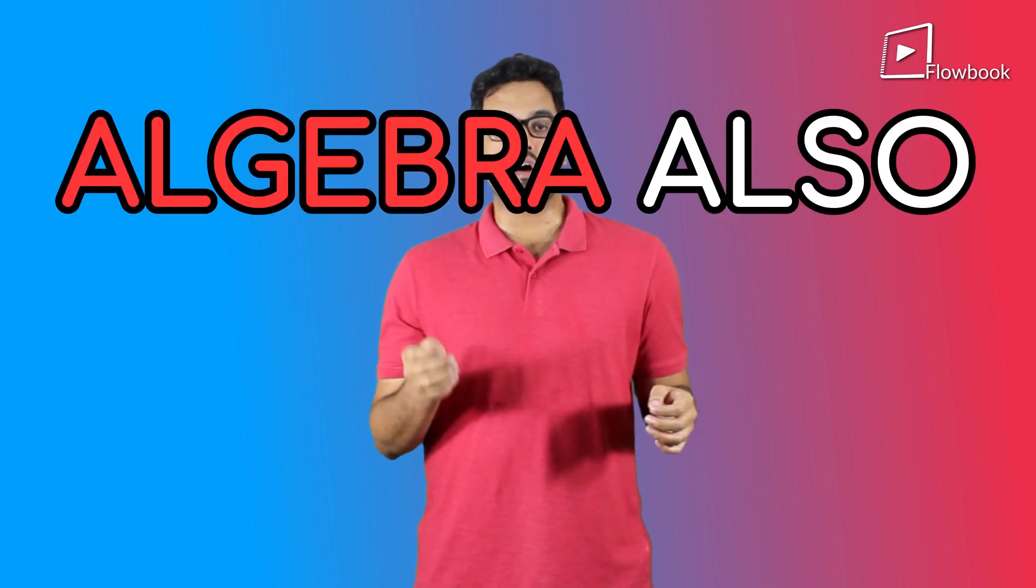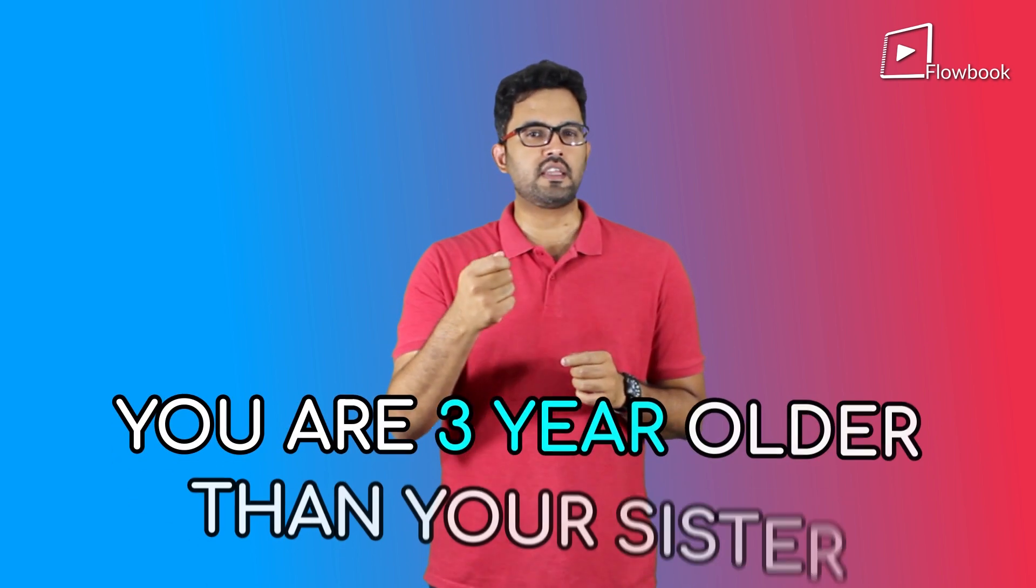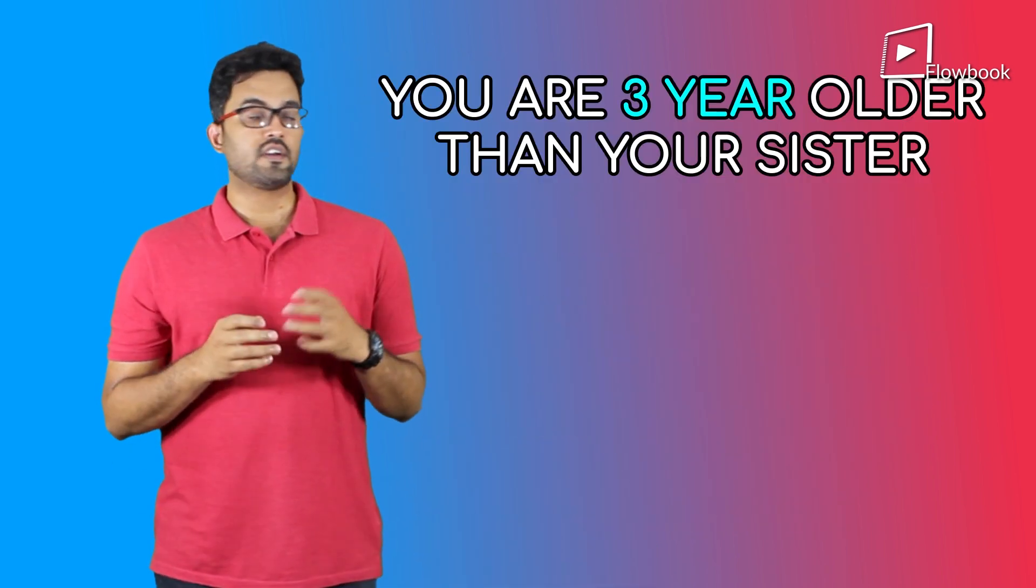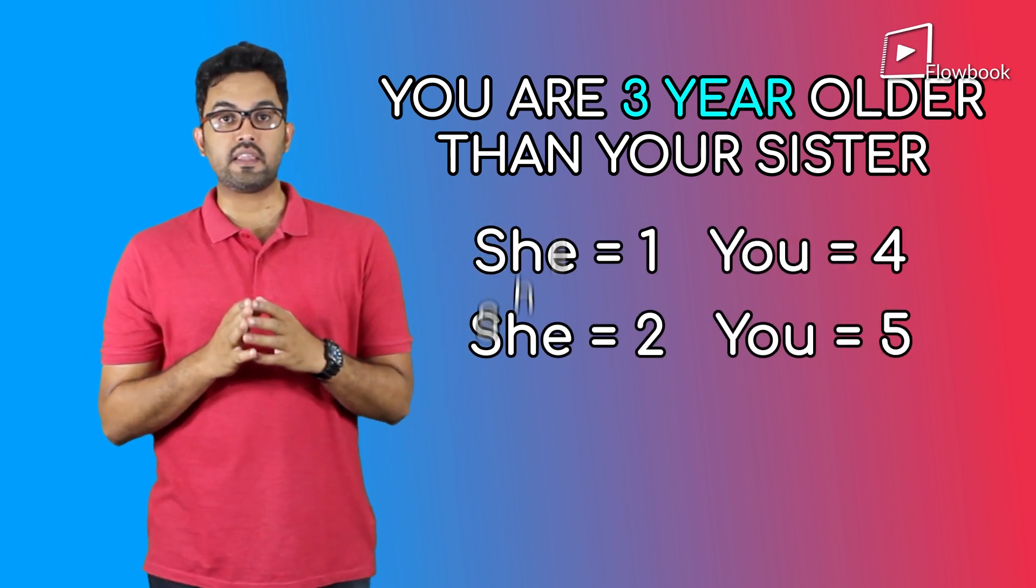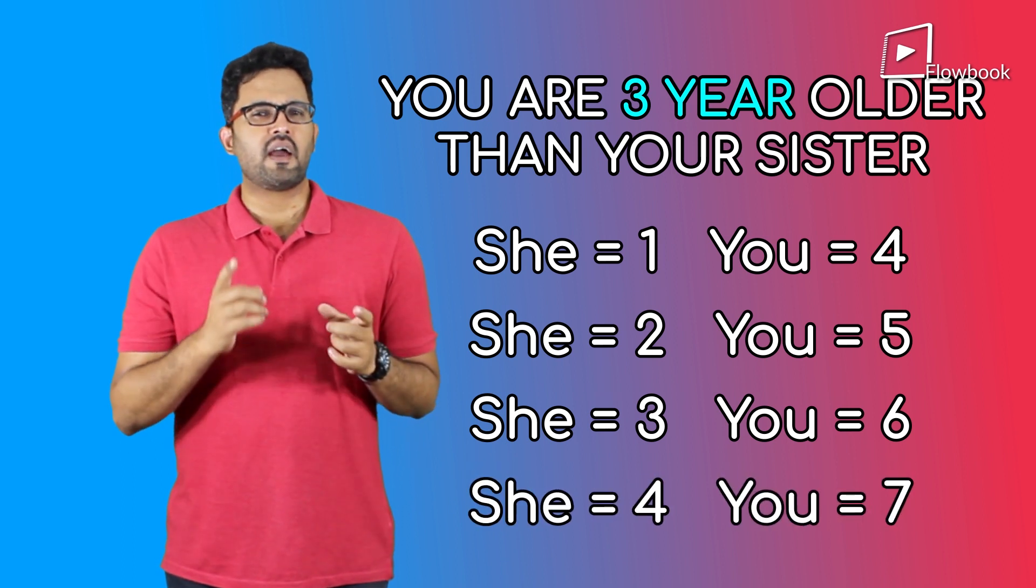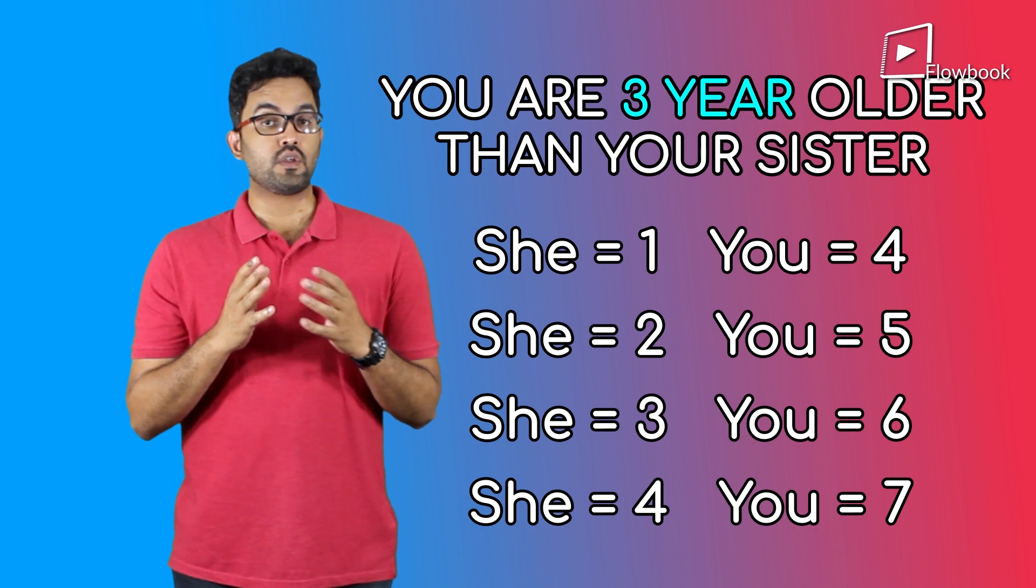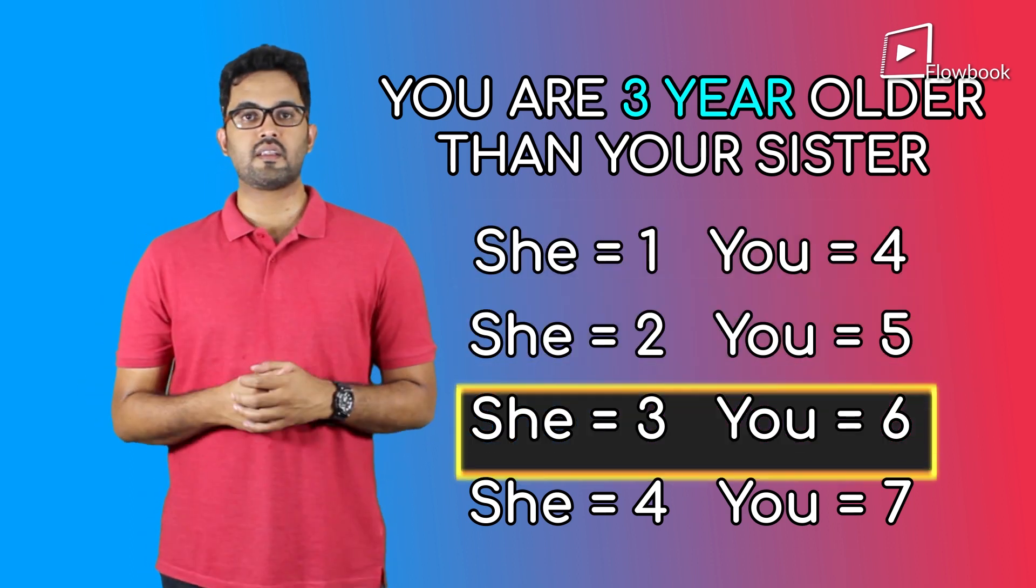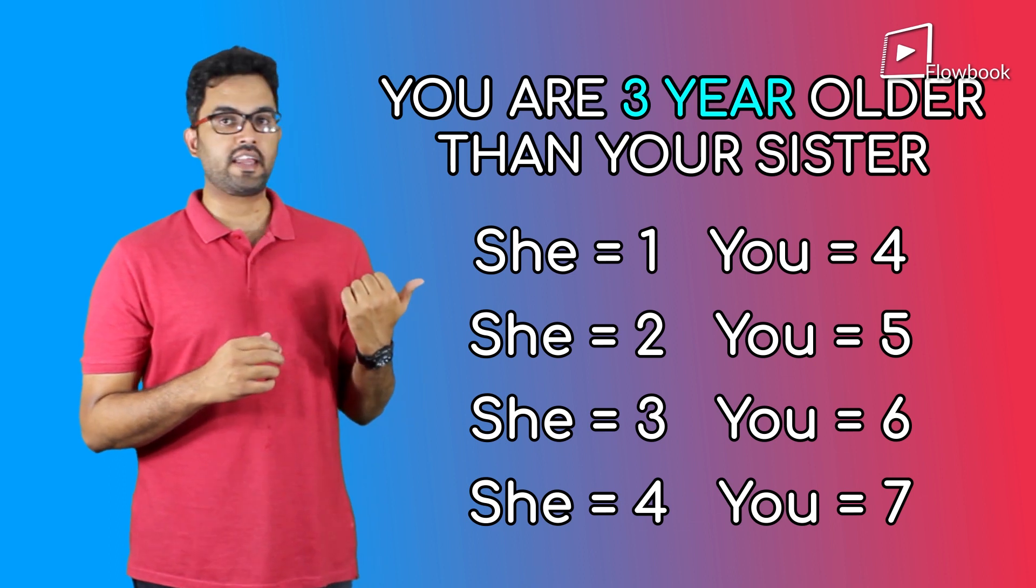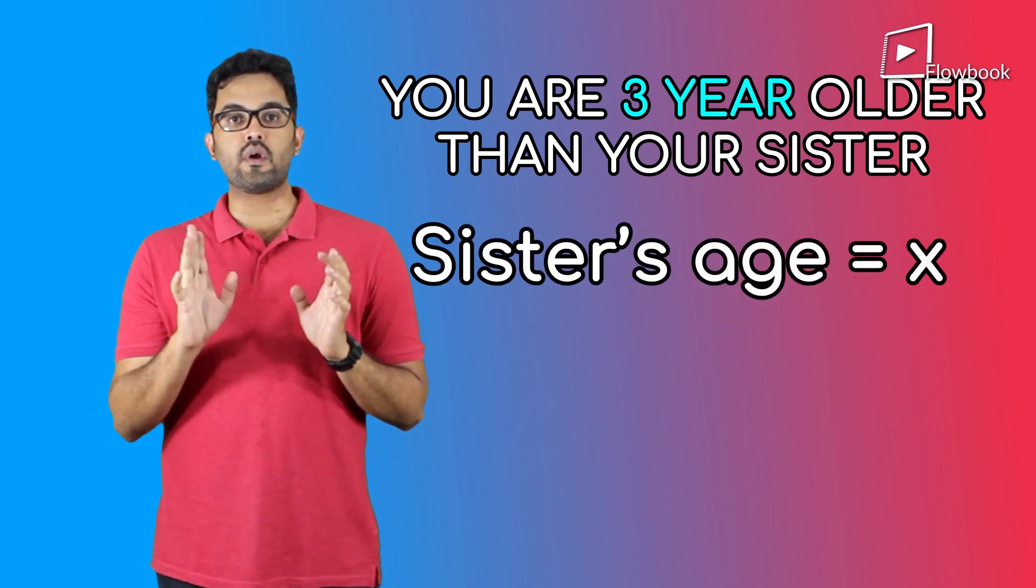On the other hand, algebra also helps us form patterns. Suppose you have a younger sister or brother and say that you are 3 years older than them. If she is 1, then you are 4. 2, then you are 5. 3, you are 6. 4, you are 7. I can see that this gets boring after a while. What you can see here is that there is clearly a pattern to all this. I can take his or her age to be anything, say a variable X, and your age would be X plus 3.